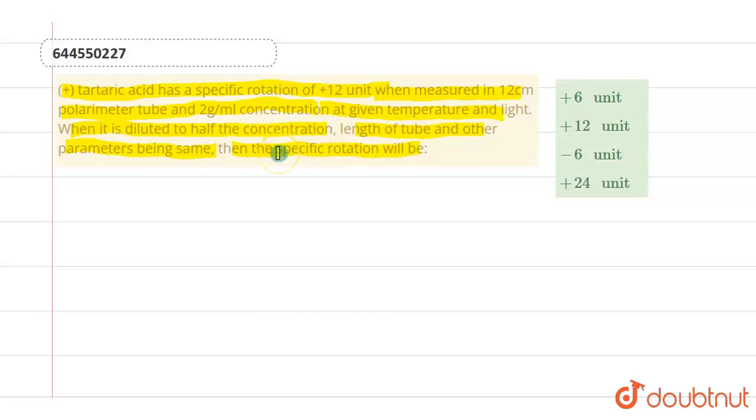So we have to find the specific rotation when the concentration is half. The specific rotation has a formula: Specific rotation at a particular wavelength and temperature is given by the angle of rotation divided by concentration into length.